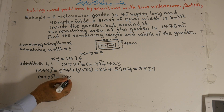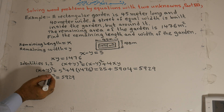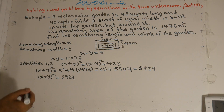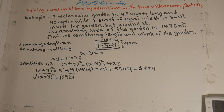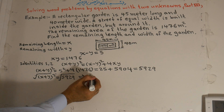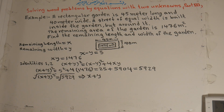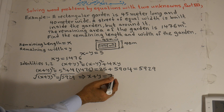This gives us 25 plus 5904, which equals 5929. Now, since the opposite of squaring is the square root, we take the square root of both sides of the equation. The square cancels, and x plus y is equal to the square root of 5929, which equals 77.